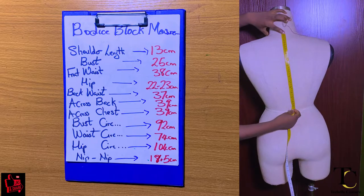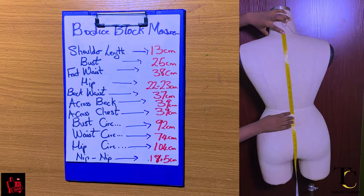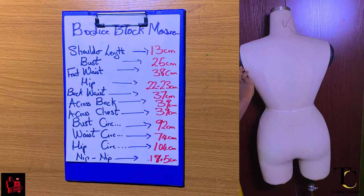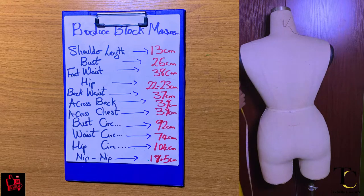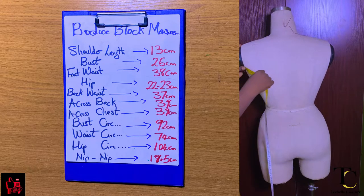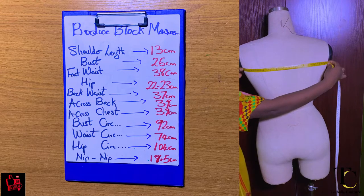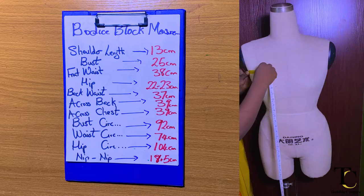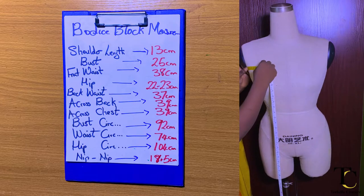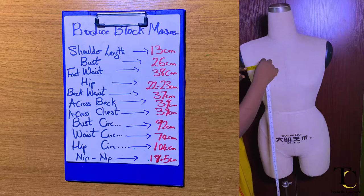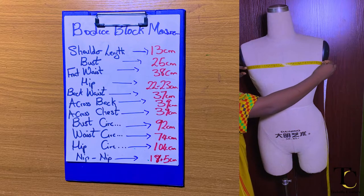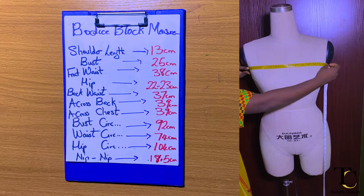I'm going to take my back waist length measurement from the tip of your neck down to your back waist. Then I want to take my cross back — from one edge of my armhole (not going into the armhole) to the other edge of my armhole. That is how to take your cross back. The next measurement is to take our cross chest, in the same manner as the cross back.